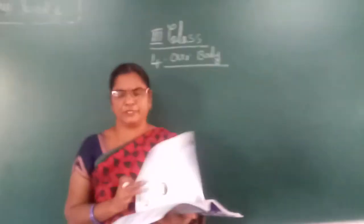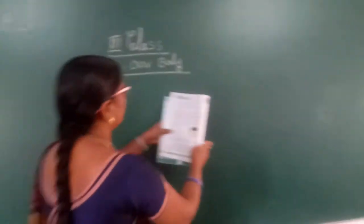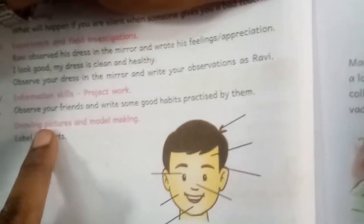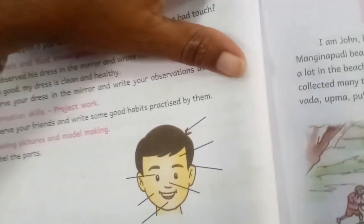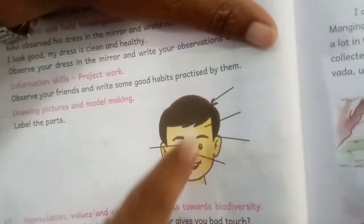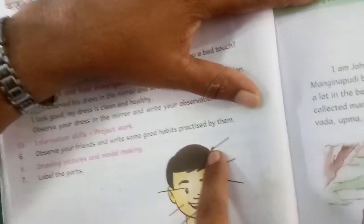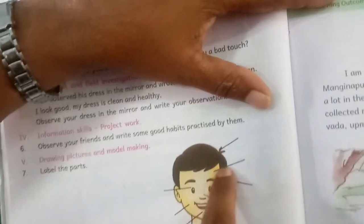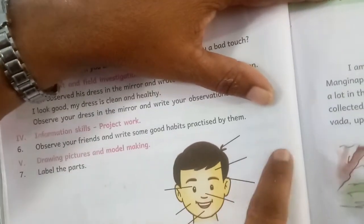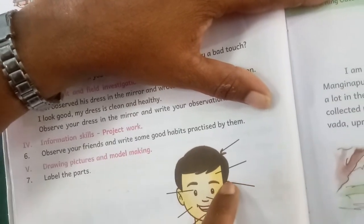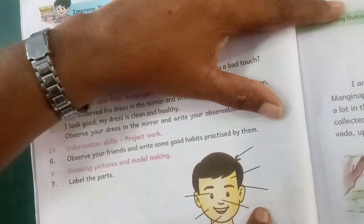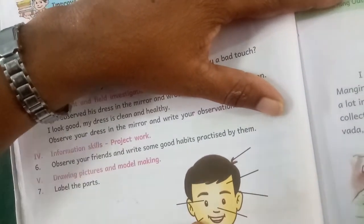Page number 42 — see this picture, children. Label the parts: drawing, pictures, and model making. Identify these parts: What is this? Hair — H-A-I-R. This one — skin, S-K-I-N. This one — ear. Nose. Eyes. Cheeks. Lips. You need to identify all these body parts.